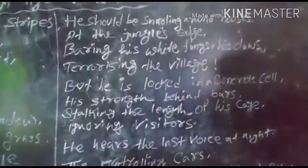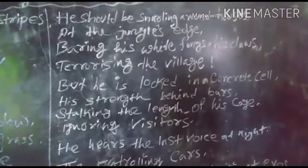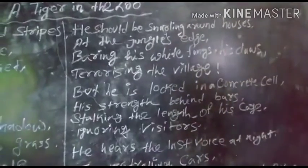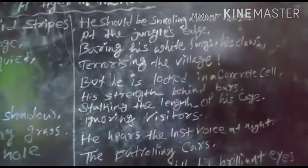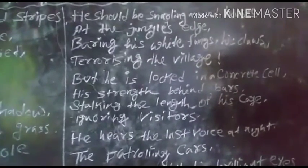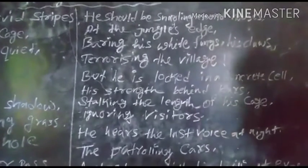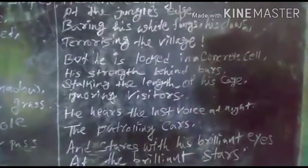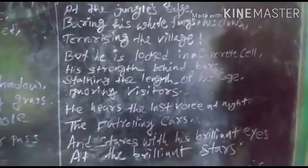If we explain the third stanza into English: In this stanza, the poet Leslie Norris imagines what the tiger should be doing if he were free — hunting his wild game. In that case, the tiger would be snarling around the houses near the jungle's edge. He would be growling near some village and showing his white fangs and fearful claws, terrorizing the villagers. Here the poet implies that if we destroy the natural habitats of wild animals, they would be invading our cities and villages, as they have started doing so now.